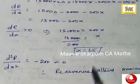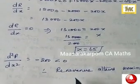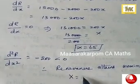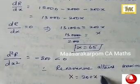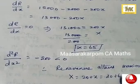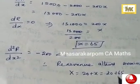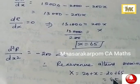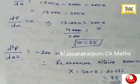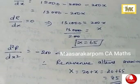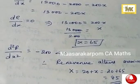When x is equal to 65, your aim is to find capital X, which is equal to 20 plus x. That is equal to 20 plus 65, that is equal to 85. So 85 is the required number of orders to receive maximum revenue. That's all.